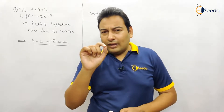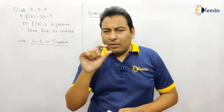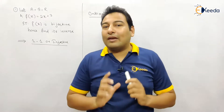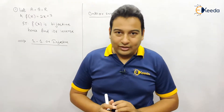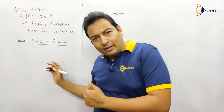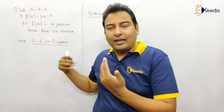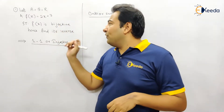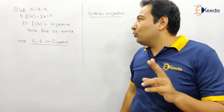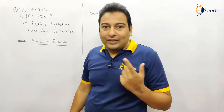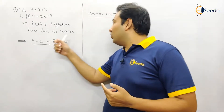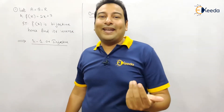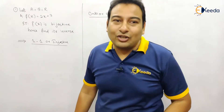First of all, remember this point: if a function is bijective, only then can you find its inverse. We'll prove it is bijective and then find its inverse. To prove the function is bijective, two things need to be proved: the function is one-to-one, and the function is onto. If both hold, we conclude the function is bijective.